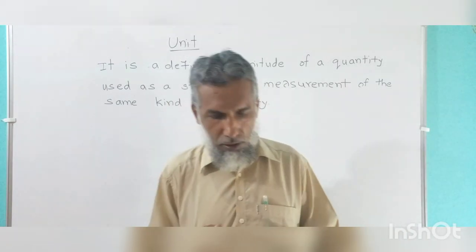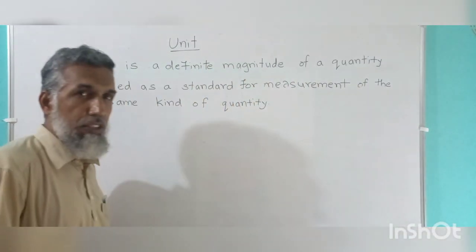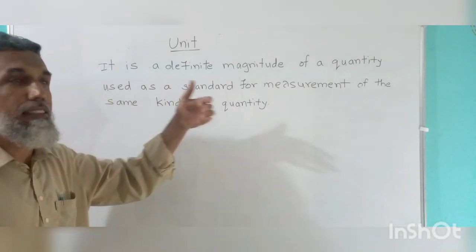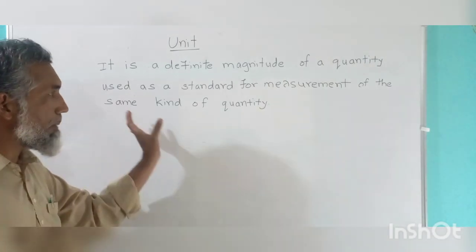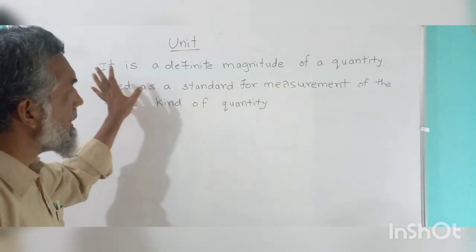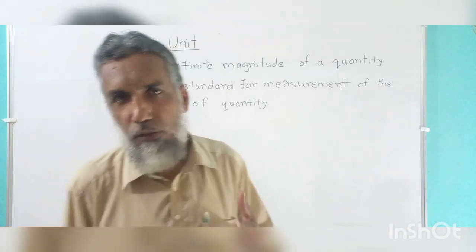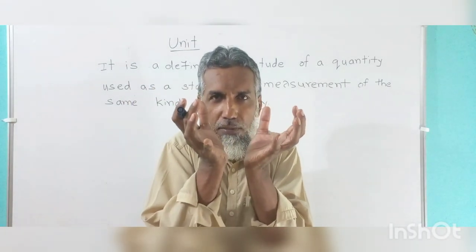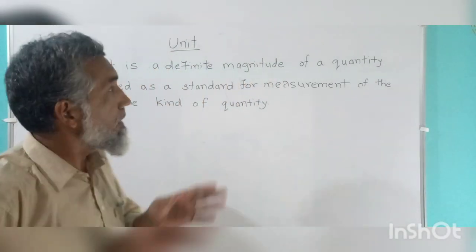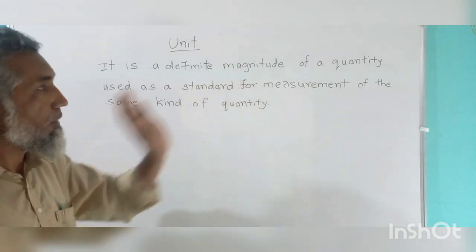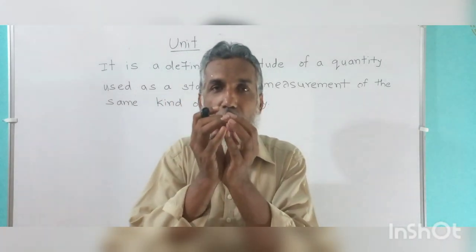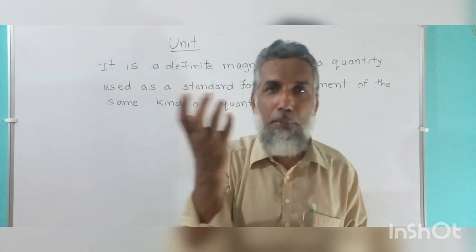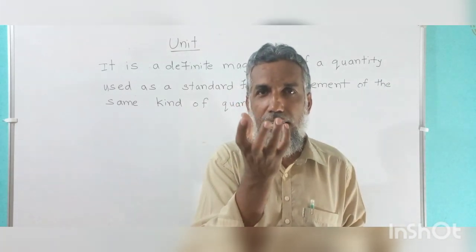Now we are going to learn about units. What is a unit? It is a definite magnitude of a quantity used as a standard for measurement of the same kind of quantity. For example, if you are defining a unit for mass, you take a definite amount — this much mass is one kilogram, like the masses you can see on the measurement weights at shops — that is a definite mass.